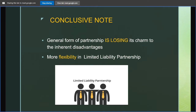On a conclusive note, general partnership is losing its charm due to its inherent disadvantages — unlimited liabilities and the risk that personal assets of the partners can be attached. Limited liability partnership is more flexible and also creates a separate legal entity for the firm, so that personal assets of the partners cannot be attached in case of loss. Our government is also recognizing this, and we have the Limited Liability Partnership Act of 2008. The way forward is limited liability partnership.